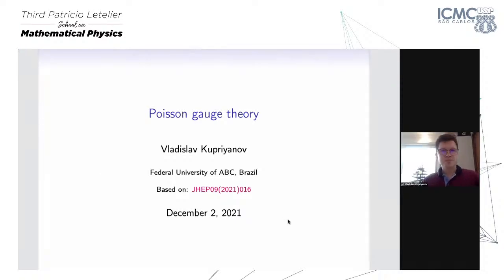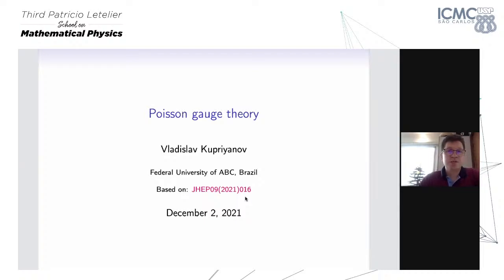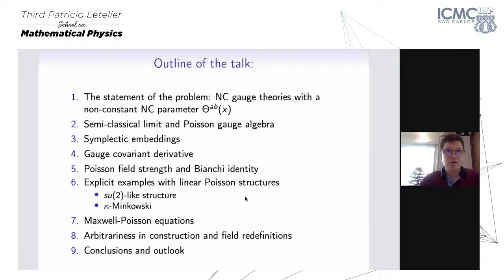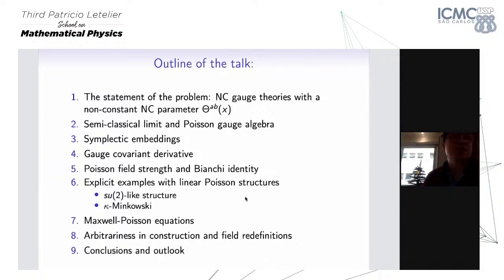Today I will talk about Poisson gauge theory. The talk is mainly based on a quite recent paper and also on earlier papers in collaboration with Richard Szabo, Patrizia Vitale, and Max Corvo. Here is the brief outline: I will start with the formulation of the problem — that is, consistent definition of gauge theories on non-commutative spaces. I will briefly discuss gauge theories, non-commutativity, and non-commutative gauge theories, then describe our recent approach based on symplectic geometry, namely on symplectic embeddings, with explicit constructions and examples.